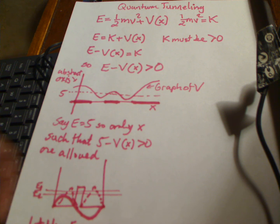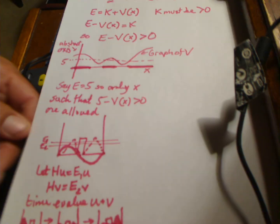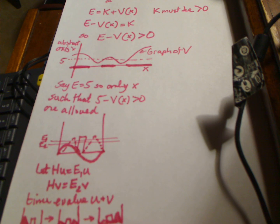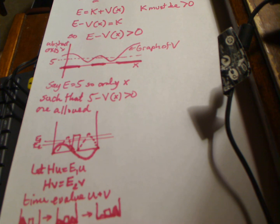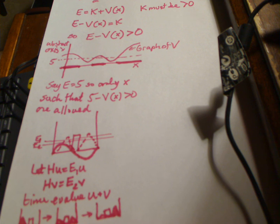Once you have that double-well potential and you're looking at it as a quantum system, you want to find the eigenvectors of the Hamiltonian, because the Hamiltonian involves a kinetic energy term and a potential energy term, just like the classical energy expression. When you look at the Hamiltonian for that system, it turns out that if parameters are chosen correctly, the two lowest energy eigenstates will have energies that are below the barrier in the middle.